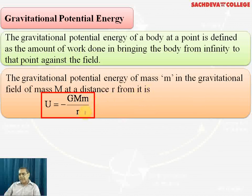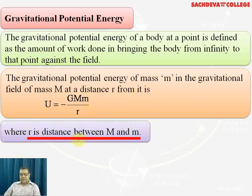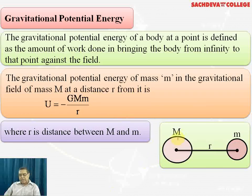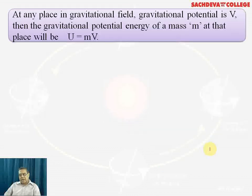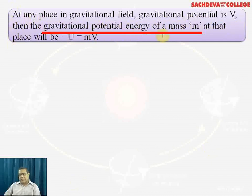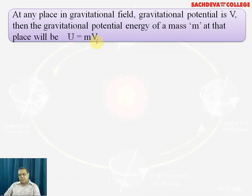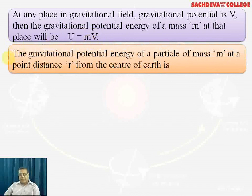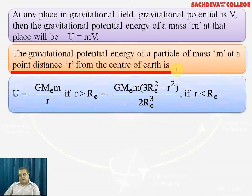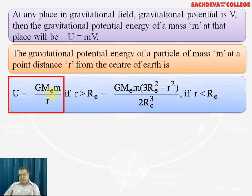U is the gravitational potential energy, where r is the distance between the two masses M and m. At any point in a gravitational field where the potential is V, the gravitational potential energy of mass m is given by U = mV. The gravitational potential energy of a particle of mass m at distance r from the center of the Earth is U = -GM_e·m/r.